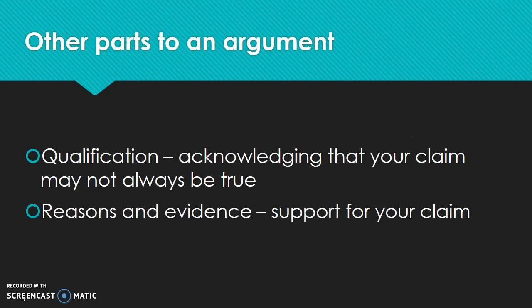There are two other parts to creating an argument. One is a qualification — this is acknowledging that your claim may not always be true, that there may be different situations, people, scenarios, or events that will change whether or not your claim is true. This won't happen quite so often in a review. But when we get to our research papers, there may be a qualification that you have to give. And then the last piece is reasons and evidence, which is essentially support for your claim.